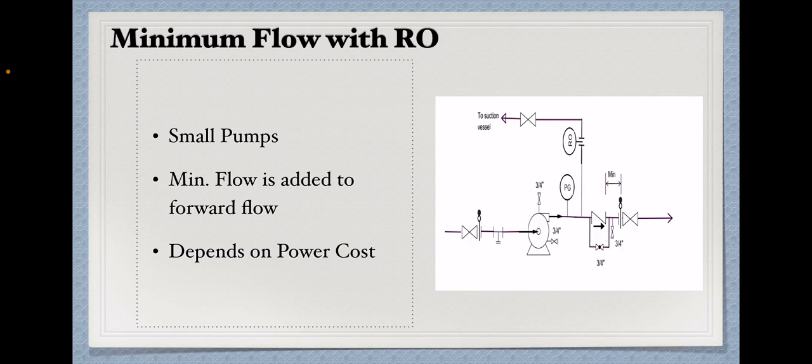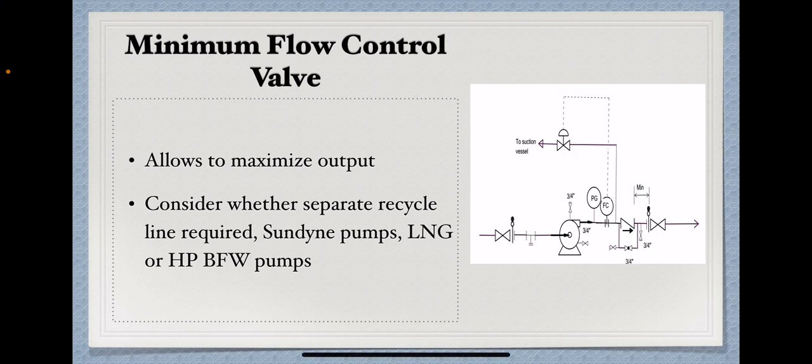Now, the option two is the minimum recirculation line with the control valve on it. Here we can see that the minimum recirculation line takeoff is at the upstream of the check valve and there is a flow meter upstream of this recycle line...